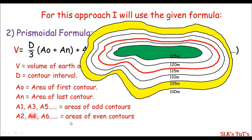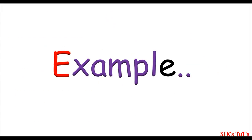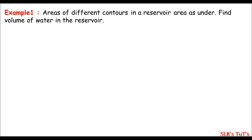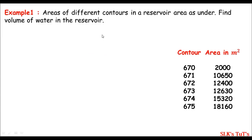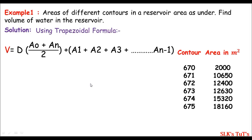In the prismoidal formula, A2, A4, A6 represent the areas of even contours. For better understanding, let's go through some examples. In Example 1, we are asked to determine the volume of water in the reservoir, and the contours and areas in square meters are given. I'll come straight into the solution using the trapezoidal formula.